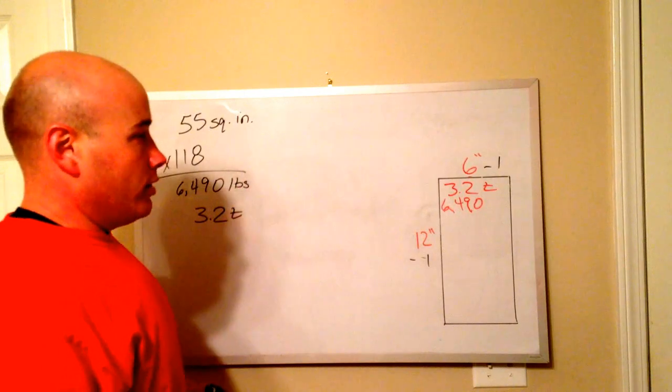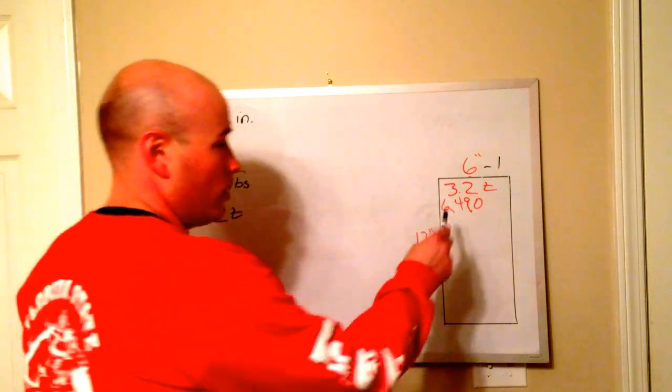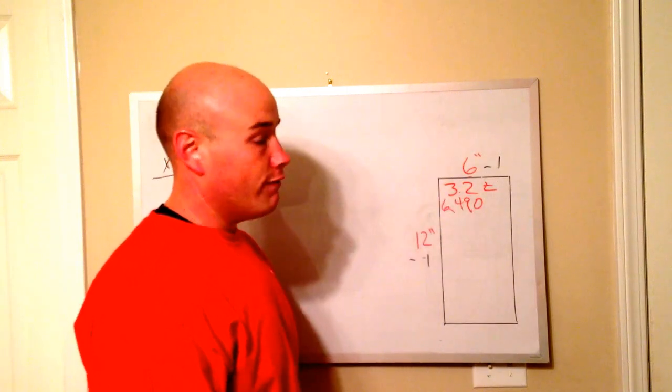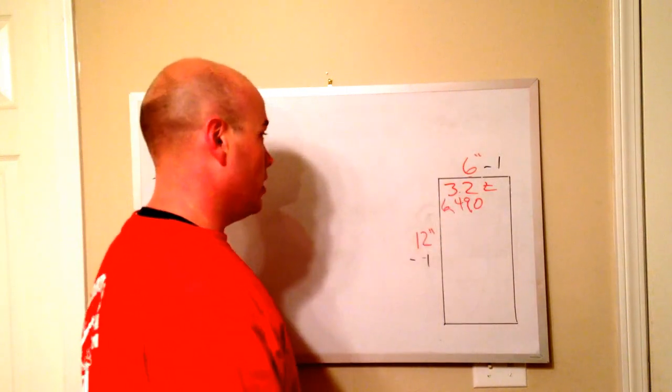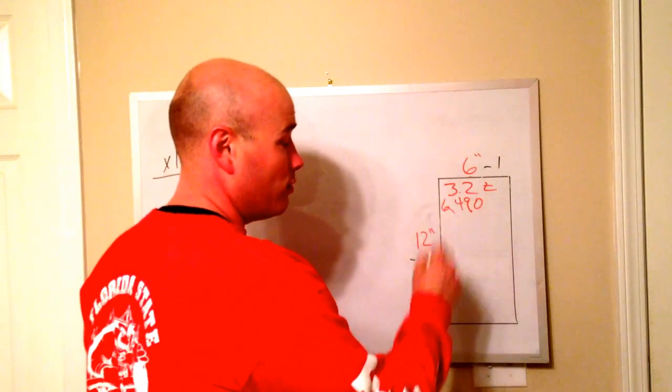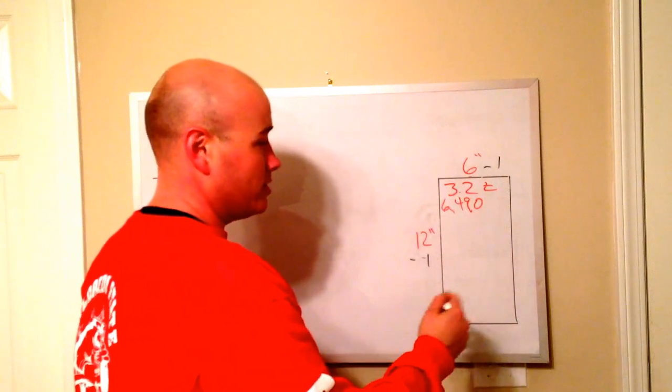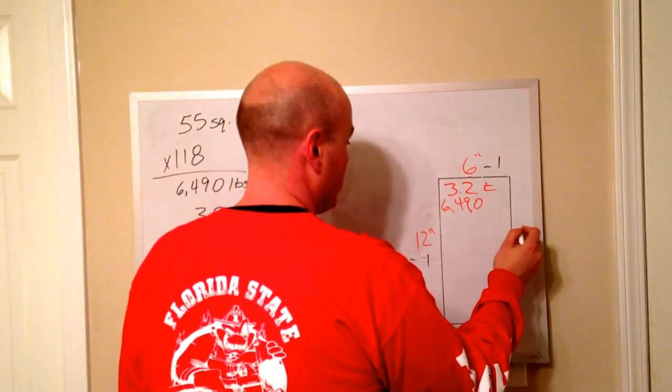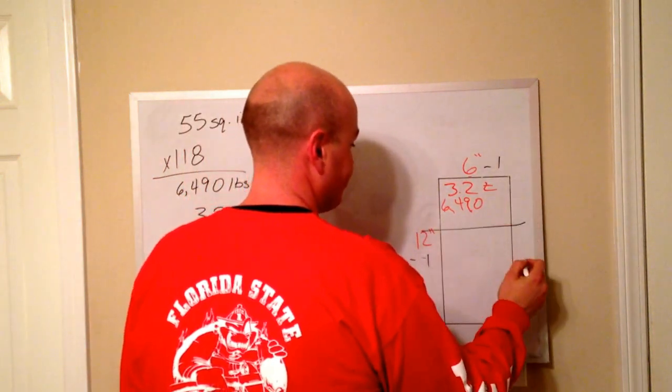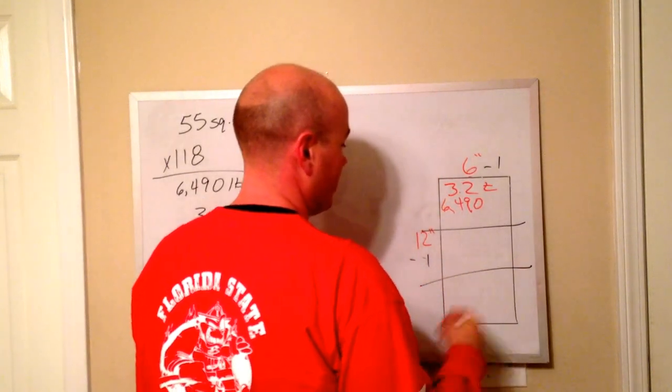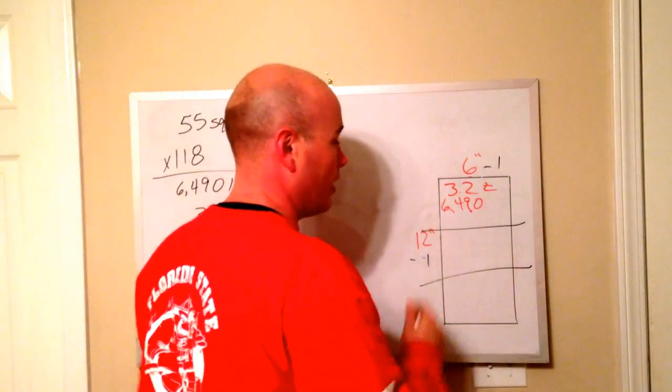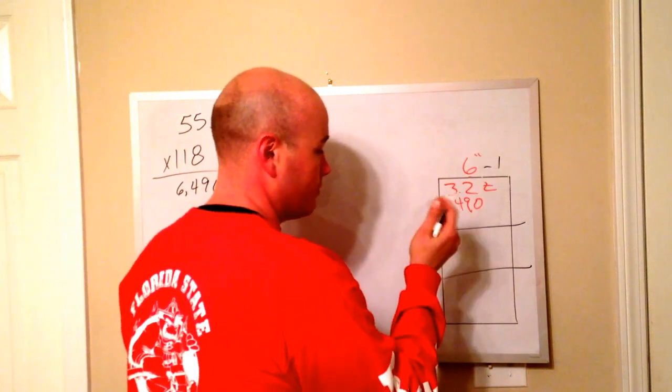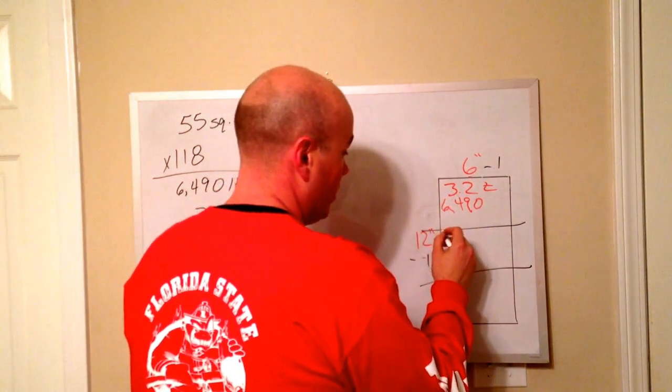That's all well and good as long as that 3.2 ton applies if the object is in full contact with all 55 of those square inches. If you have an object that is not in full contact, let's say we had an object laying across the bag, a frame of a vehicle. We wouldn't use this bag necessarily for lifting a vehicle, but I'm just using it for an example.